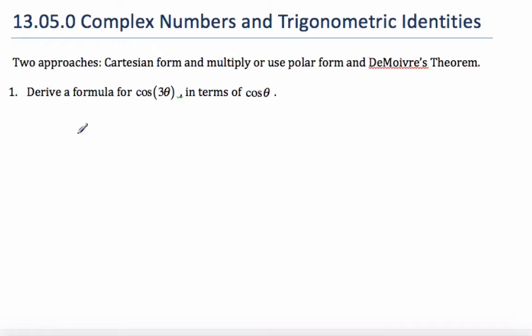We're now into complex numbers and trig identities, and we're going to try and derive a form of cosine 3 theta in terms of cos theta. I'm going to do it two different ways. The first way is using trig identities on their own.